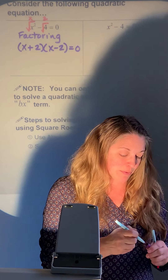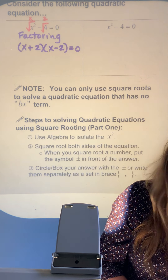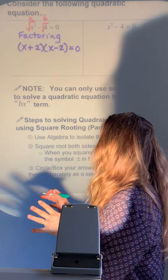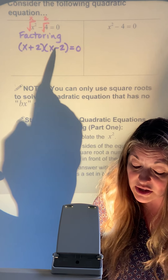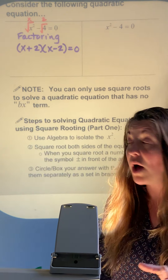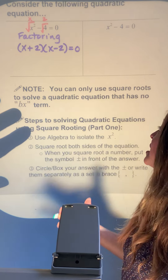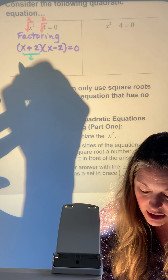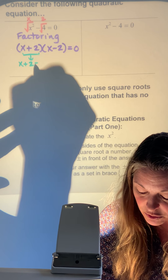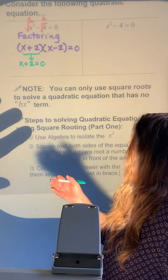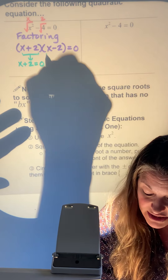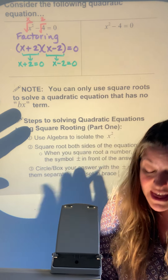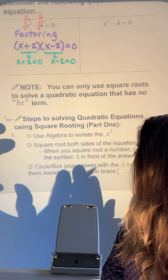Remember each factor must be set equal to zero — that's the zero product property. The idea is that if you have two things being multiplied, one of them must be zero. So either x plus 2 equals zero, or x minus 2 equals zero.